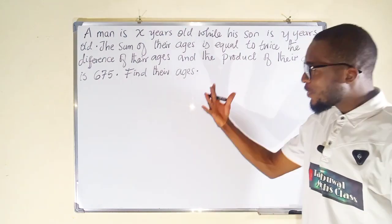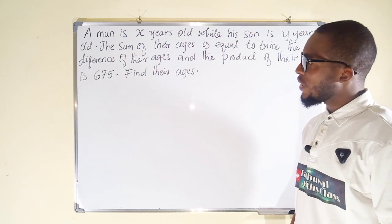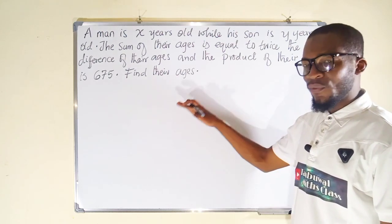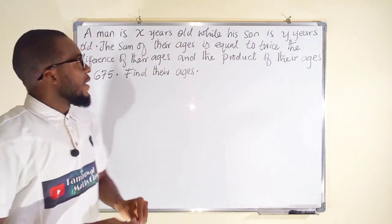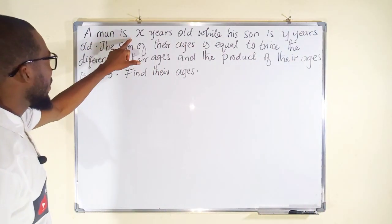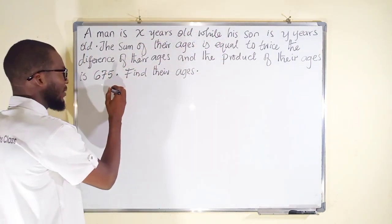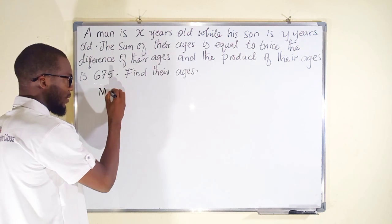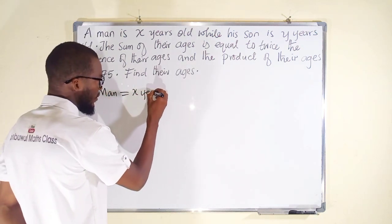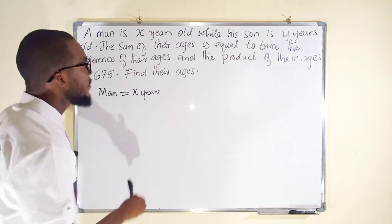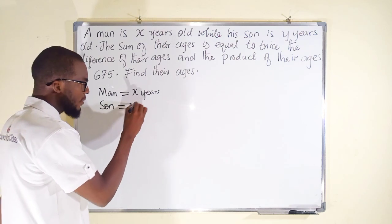We are going to follow this question line by line and see how we can transform it into equations. A man is x years old, so the man has x years. His son has y years.